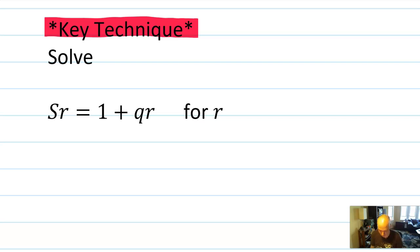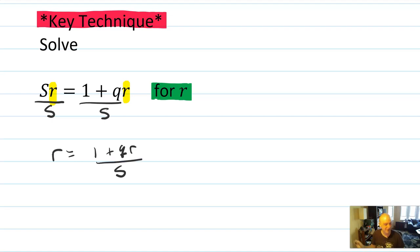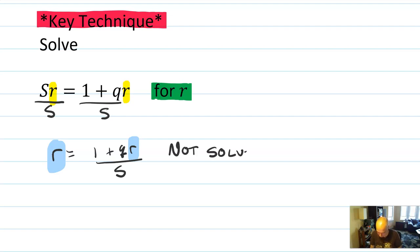Here is the problem. I'm trying to solve this for r, and in this equation I notice that there are two copies of the letter r. Someone approaching this naively might say, why don't I just divide both sides by s, and then I get r equals (1 plus qr) over s. Yes, you have solved for r, but what you have failed to do is actually isolate the variable r. So if I was trying to plug in some numbers and figure out what r is, I wouldn't be able to do it. This is not solved.